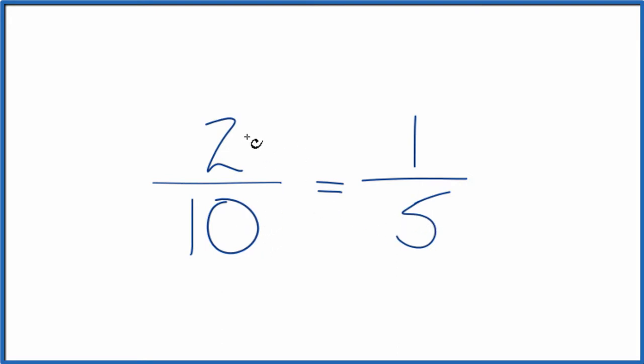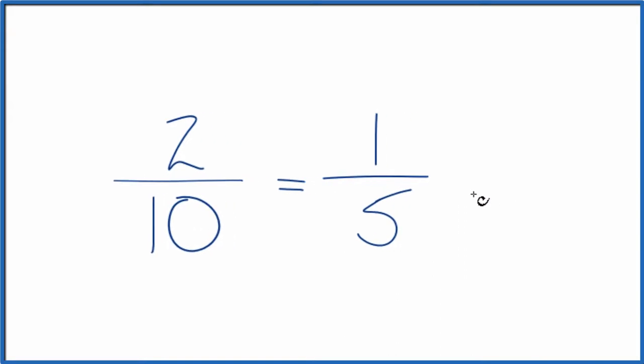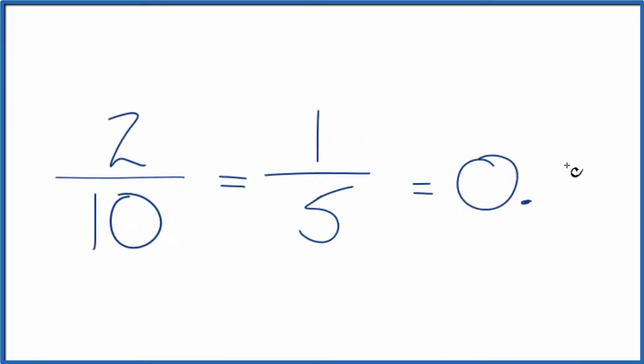If you divide two by ten, or one by five, you end up with 0.2 because they're equivalent. They have the same value — they're just written differently.